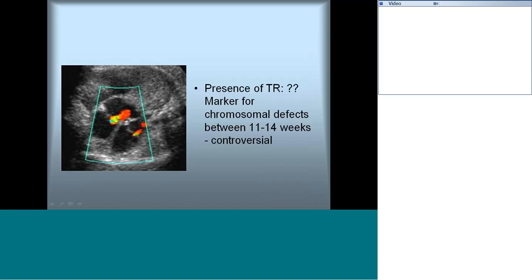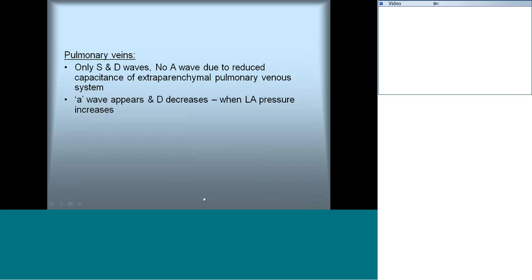Any amount of tricuspid regurgitation is abnormal, especially when seen earlier in gestation — it is controversial, but most agree it is a marker of chromosomal defect. Pulmonary veins are extremely difficult to obtain, but later in gestation some venous flow can be appreciated showing S and D waves. No A wave should be present in pulmonary venous flow because of the lower capacitance of the pulmonary venous system. If an A wave appears and the D wave decreases, it indicates elevated LA pressures.